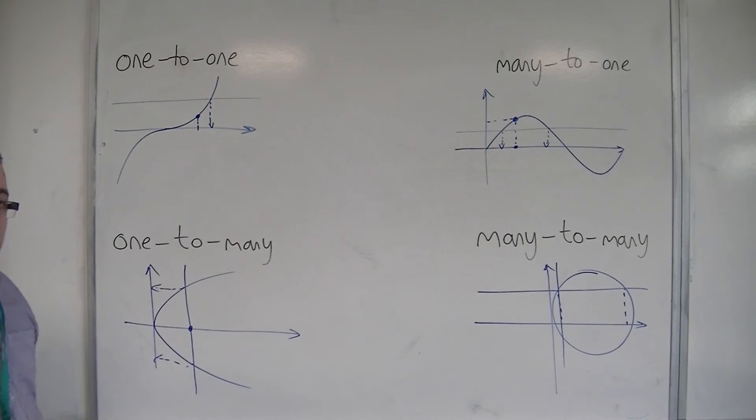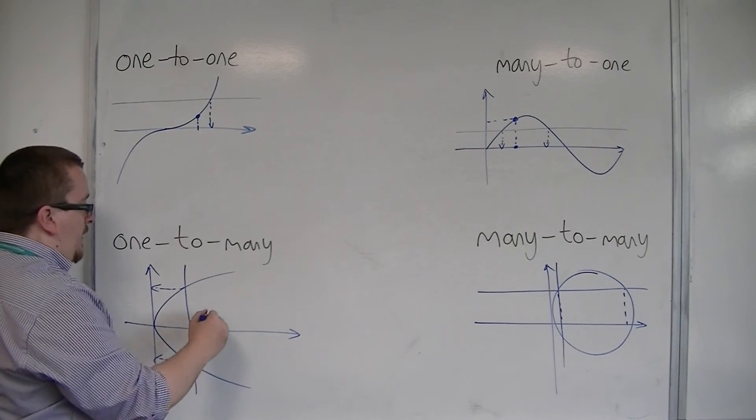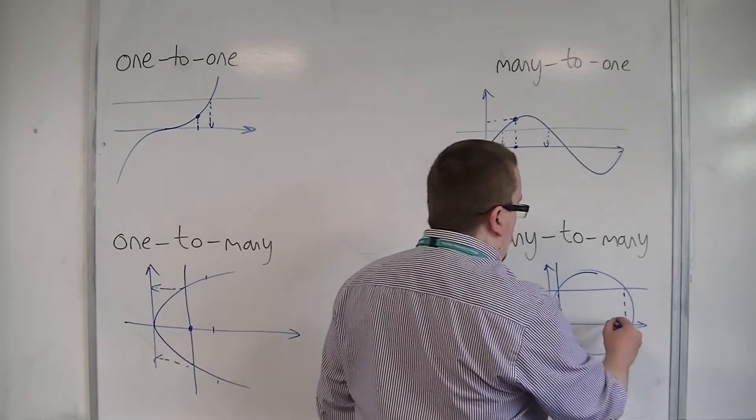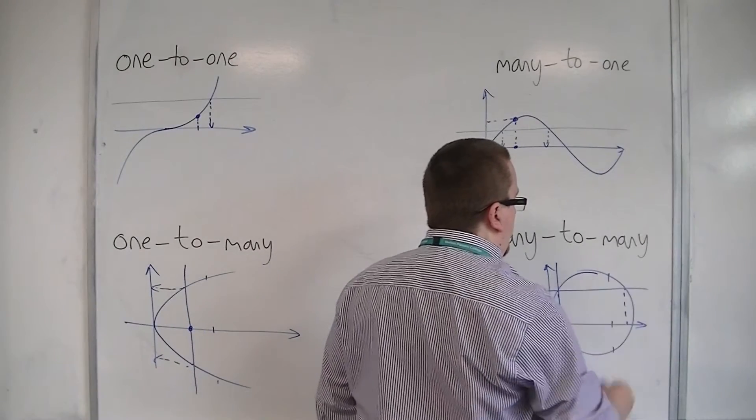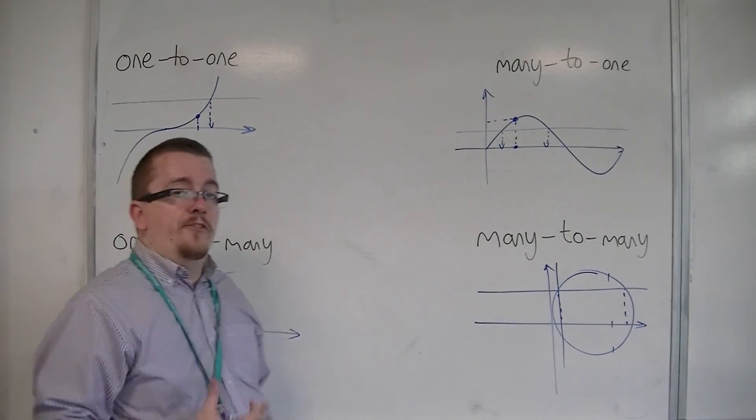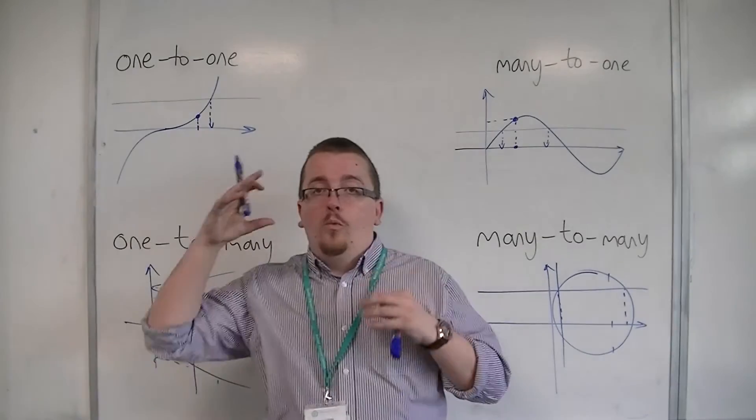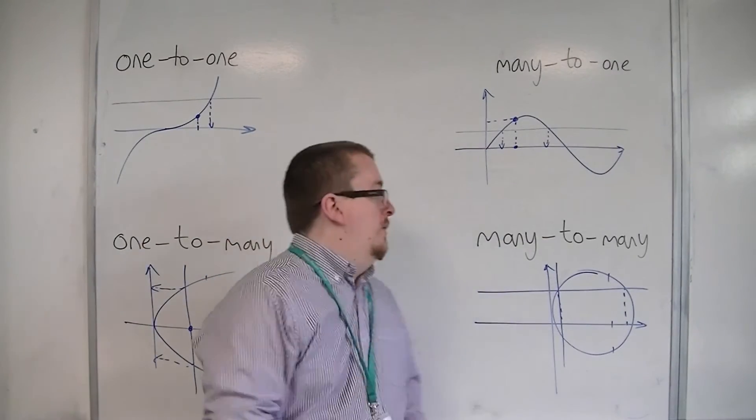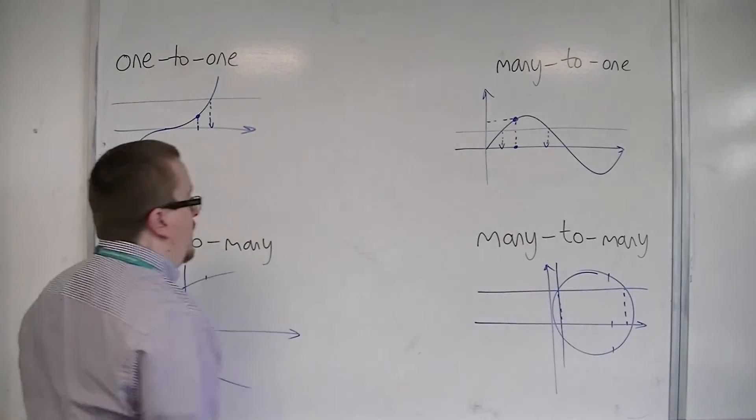If I'm over here, if I put in one value of x, I get two values of y. If I put in one value of x here, I get two values of y. So, because a function is defined as having one input and only one output, these two cannot be functions.